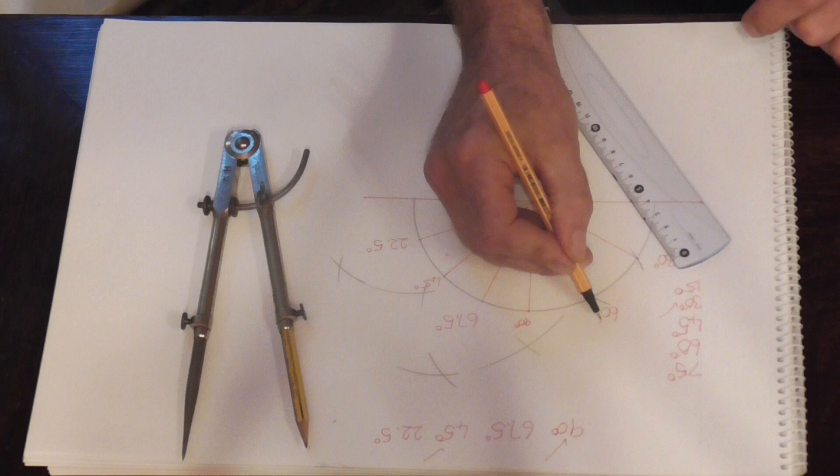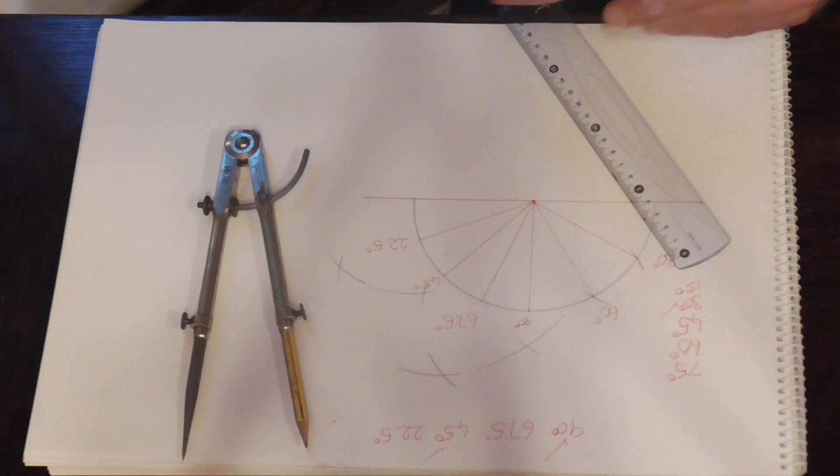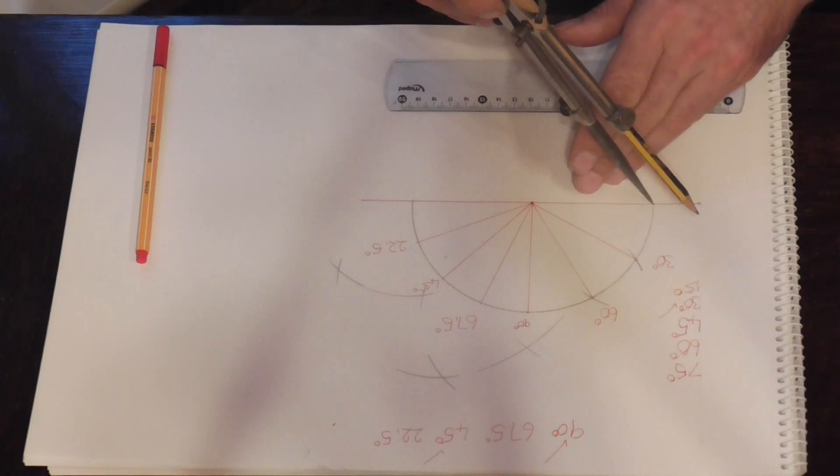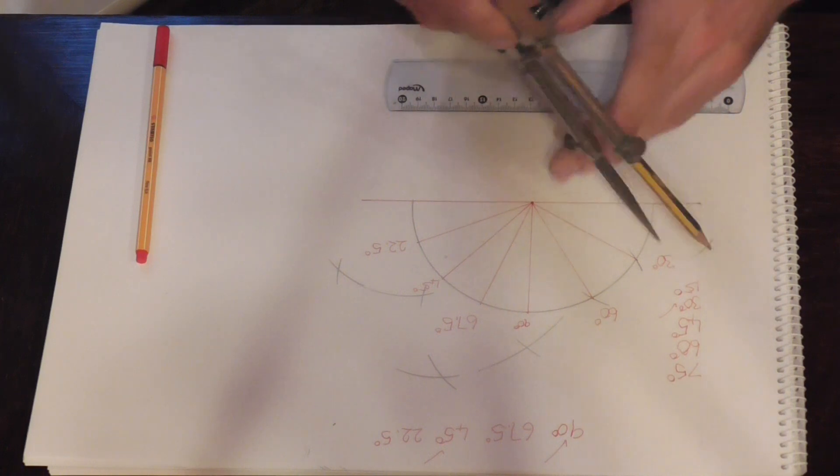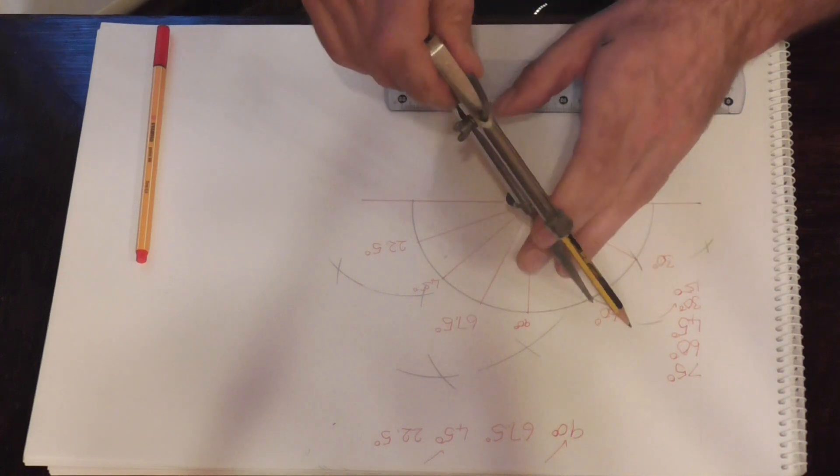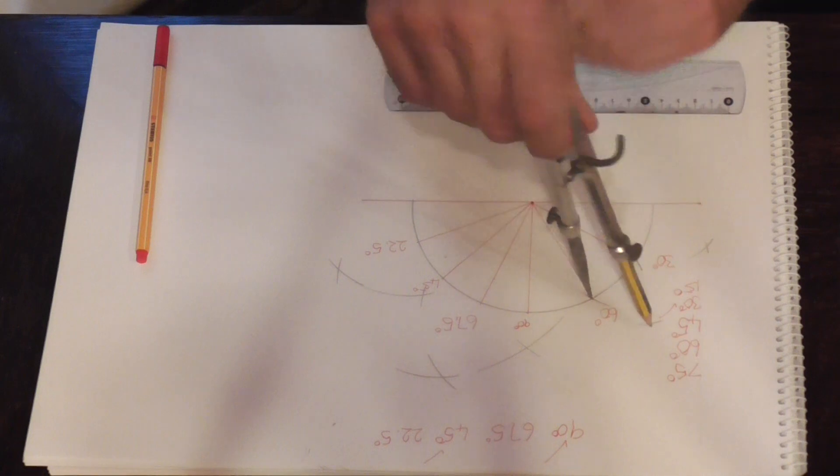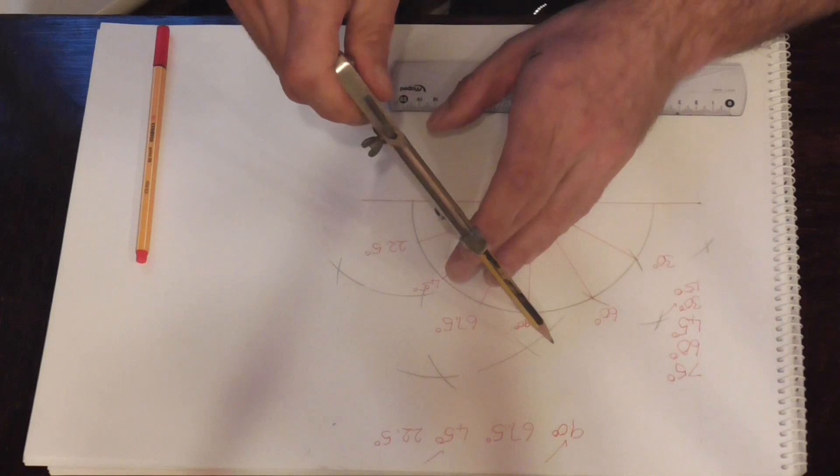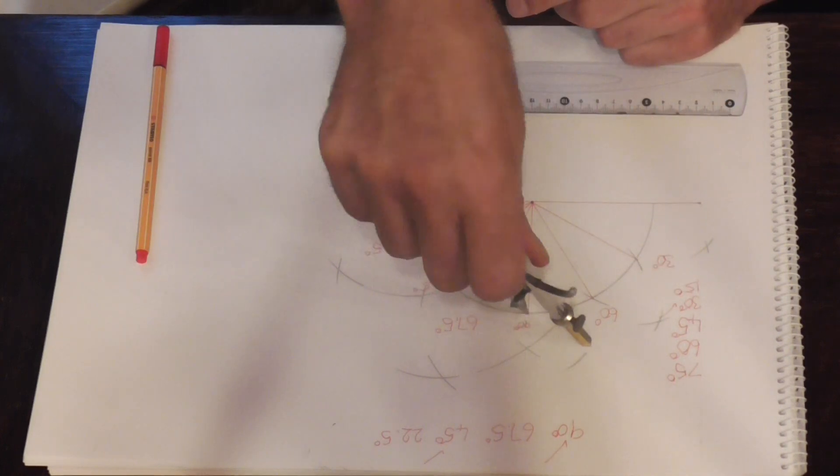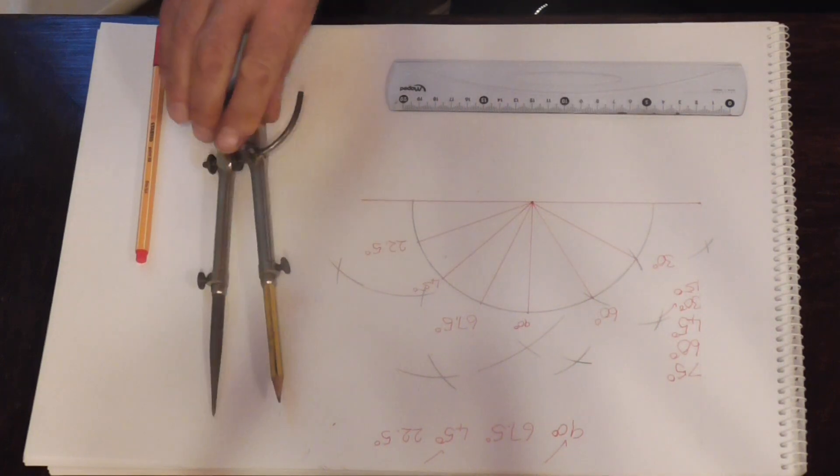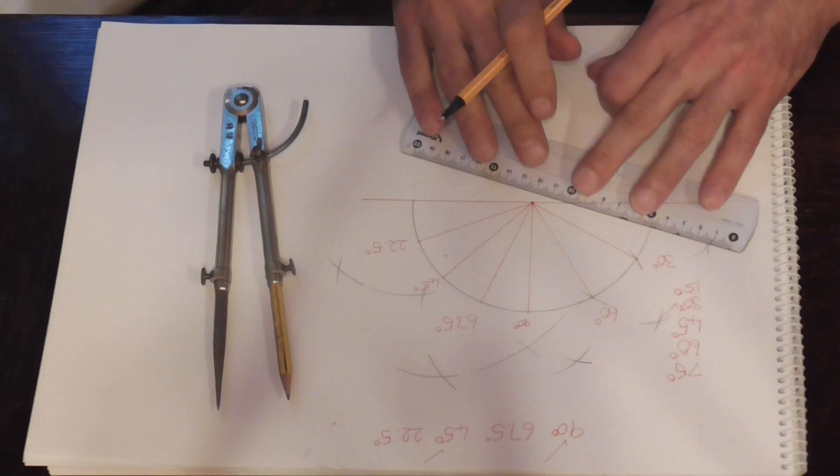Let's have a 60 degrees. I'll go from there to there, to there, to there, to there, to there.